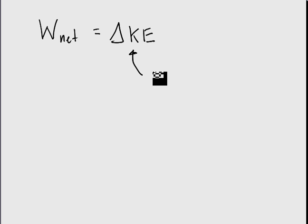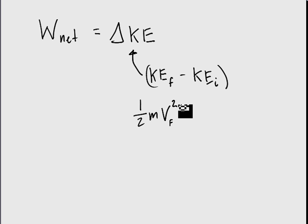Let's unpack this. The change in kinetic energy is going to be the final kinetic energy minus the initial kinetic energy. And we know that kinetic energy is 1/2 mv squared. So assuming that the mass stays the same, the final kinetic energy will be 1/2 m V_f squared, and the initial kinetic energy will be 1/2 m V_i squared.